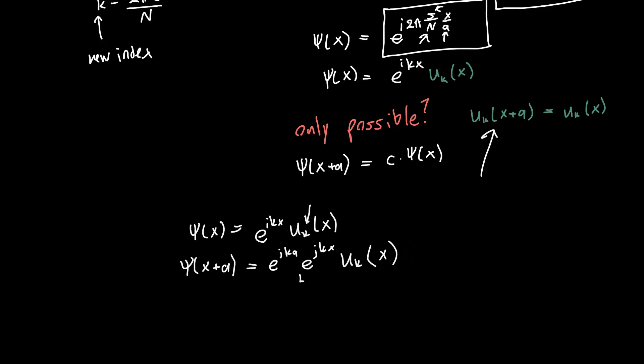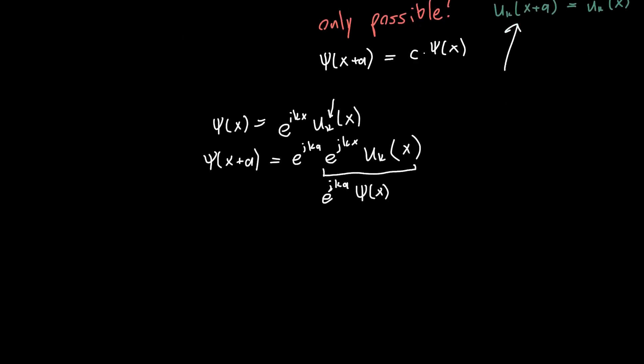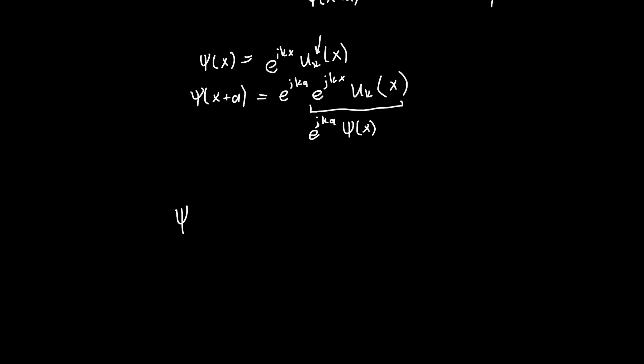And so this was our initial wave function, psi of x. And it's now multiplied by e to the i k a, or e to the j as I've been using. And so this is the final statement of Bloch's theorem, that the wave function can be written as e to the i k x times some periodic function, which might also be a function of k, and is a function of x. So this is our final form of Bloch's theorem.